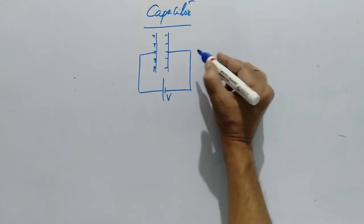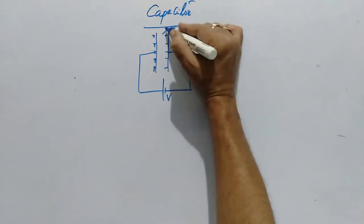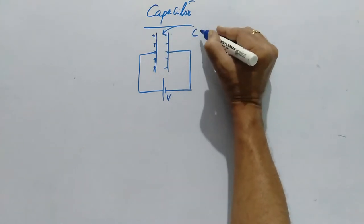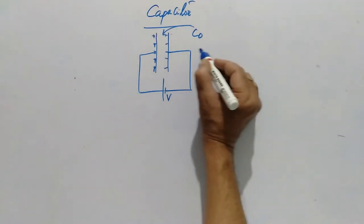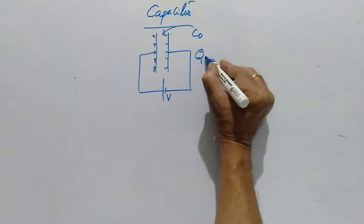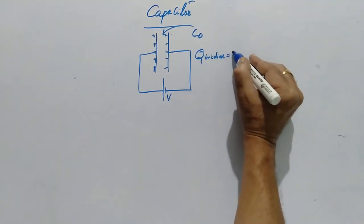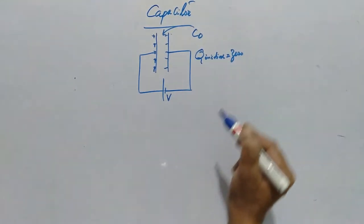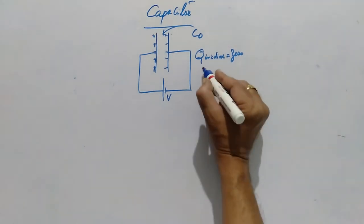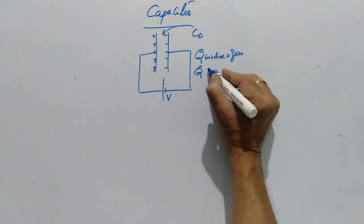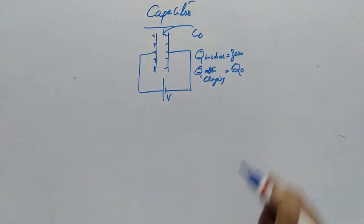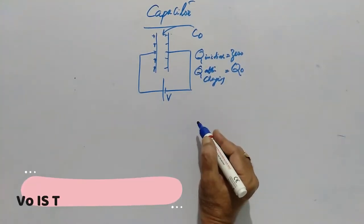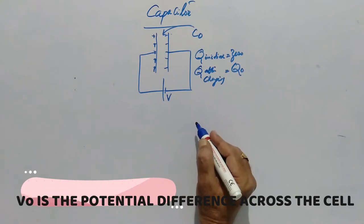And the capacitance is C₀. Initially, the charge Q_initial is zero, that is before charging the capacitor. And Q after charging, let it be the maximum Q₀.